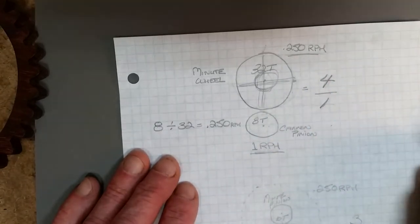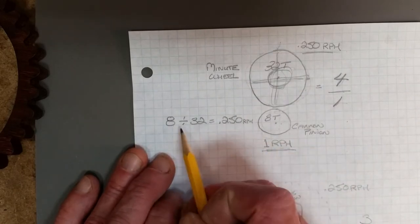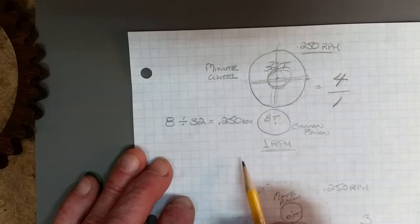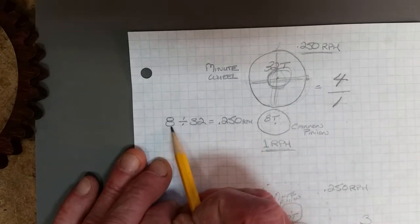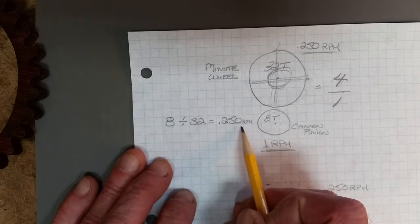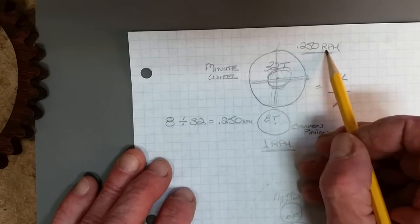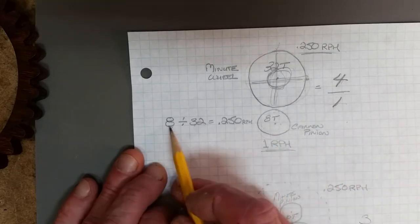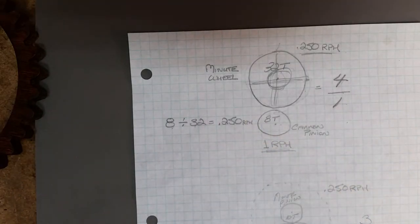The common denominator here is four, so we can say that this is a 4 to 1 ratio. It's pretty easy to figure out without doing math. Some of the gears are a little trickier than that. If you want to figure out the speed, we can simply divide the small gear into the large gear: 8 by 32 and we come up with 0.250 RPH.